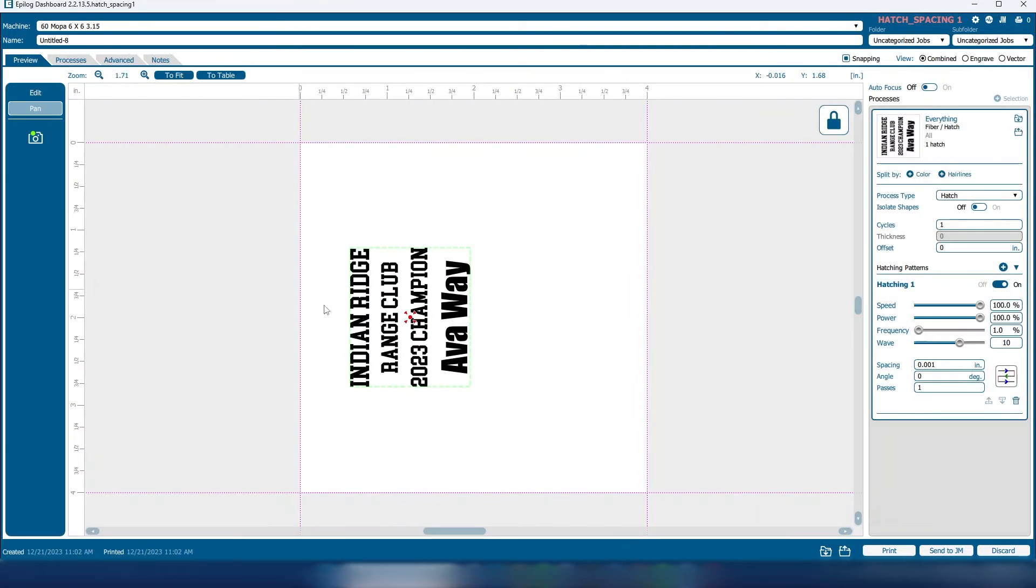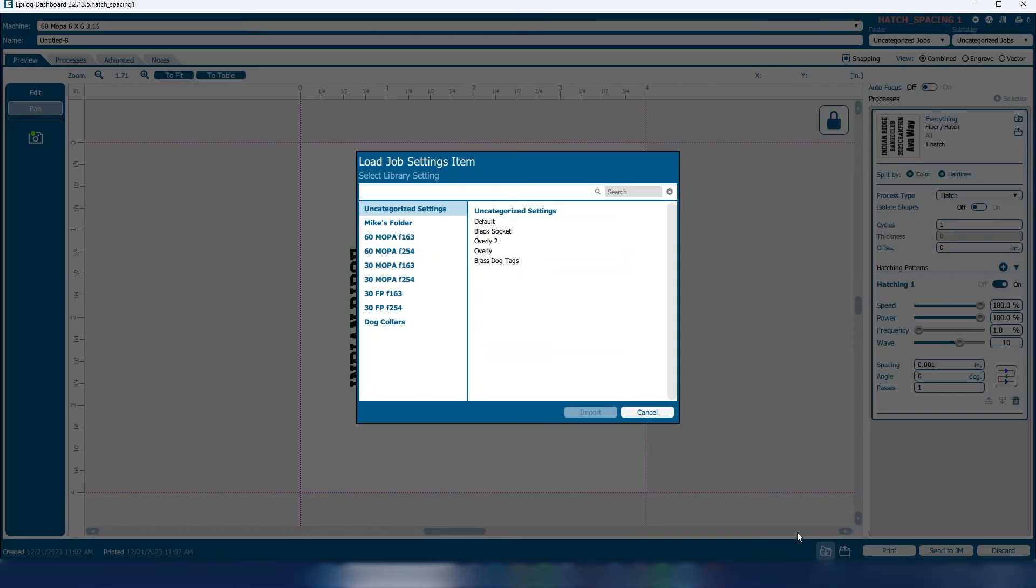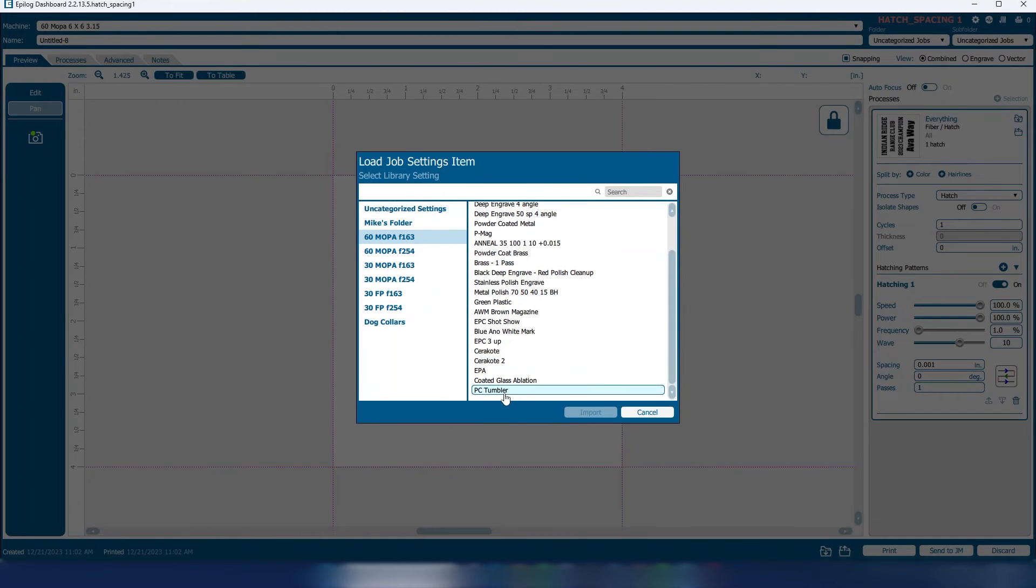So in our graphic, the center of the graphic right here is where the mark is going to be when I set that red dot pointer at the machine. I'm also going to import some laser parameters for the powder-coated tumbler. These are all preset. So I just import that.